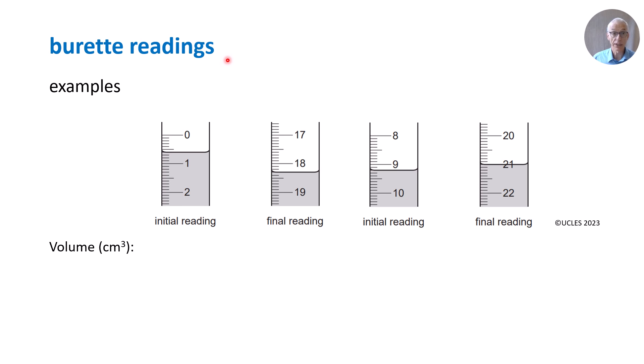You are expected to interpret pictures of burette readings and deduce the volume delivered. We have an initial reading and a final reading and then another set together, an initial reading and a final reading. Write down the volume in this burette, in this one and in this one. So there are four readings there. What are the volumes? Write them down.